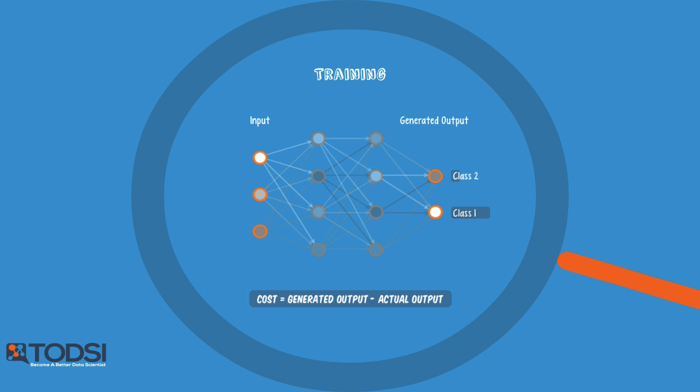To do this, the net tweaks the weights and biases step by step until the prediction closely matches the correct output. Once trained well, a neural net has the potential to make accurate predictions each time. This is a neural net in a nutshell.